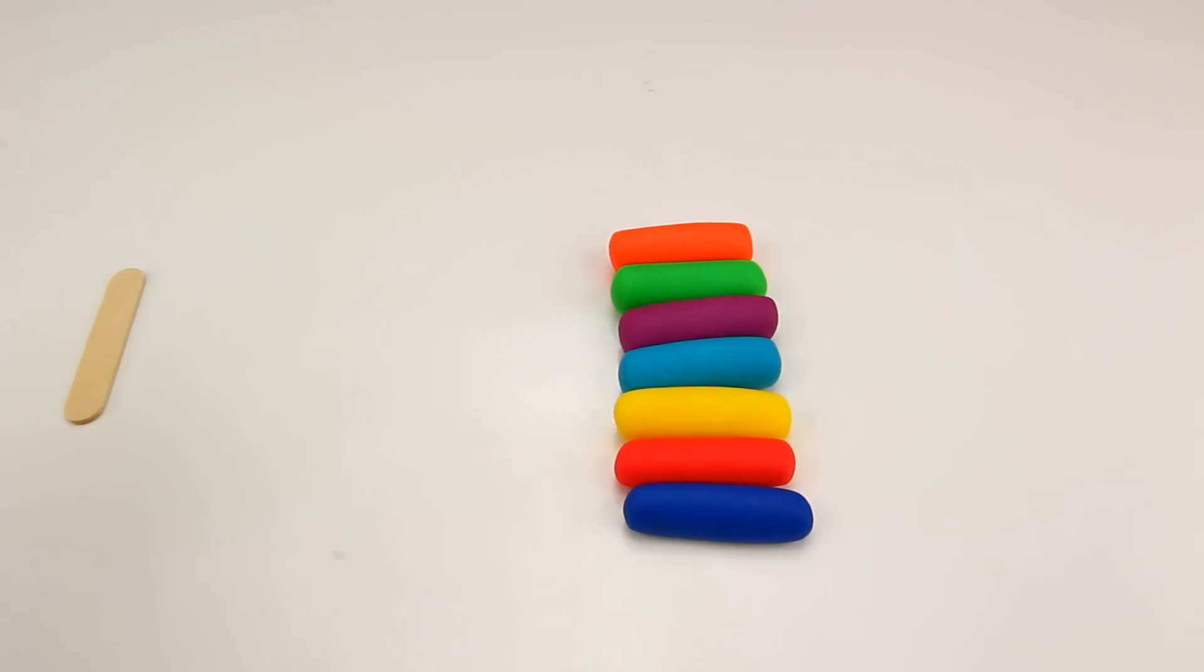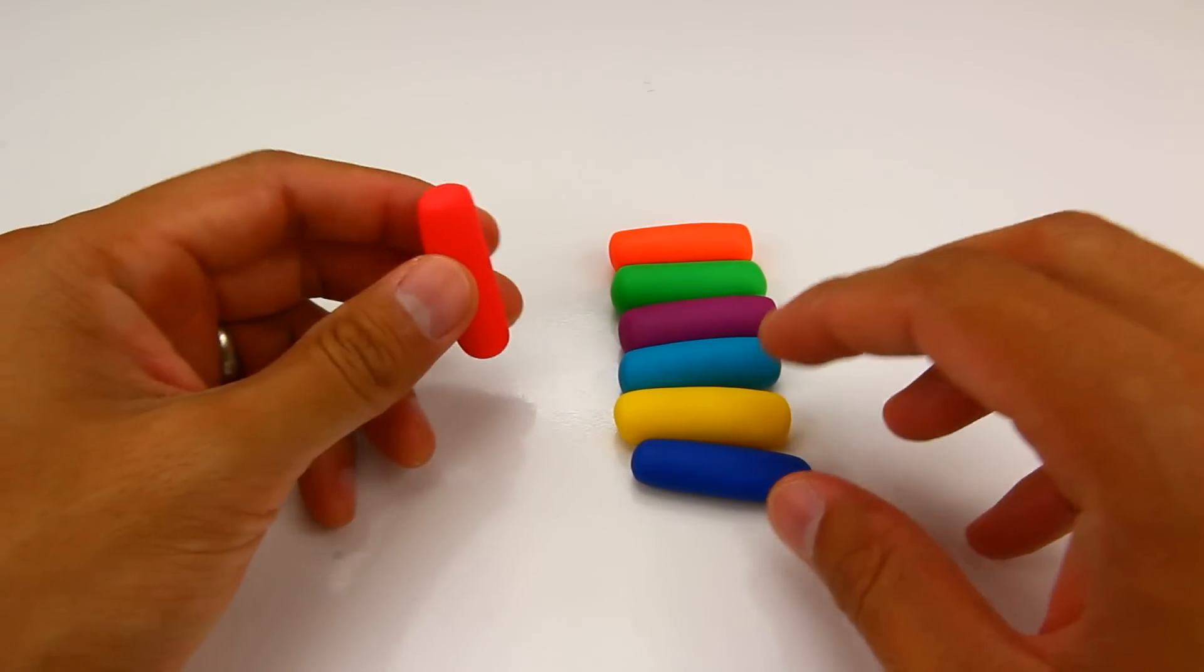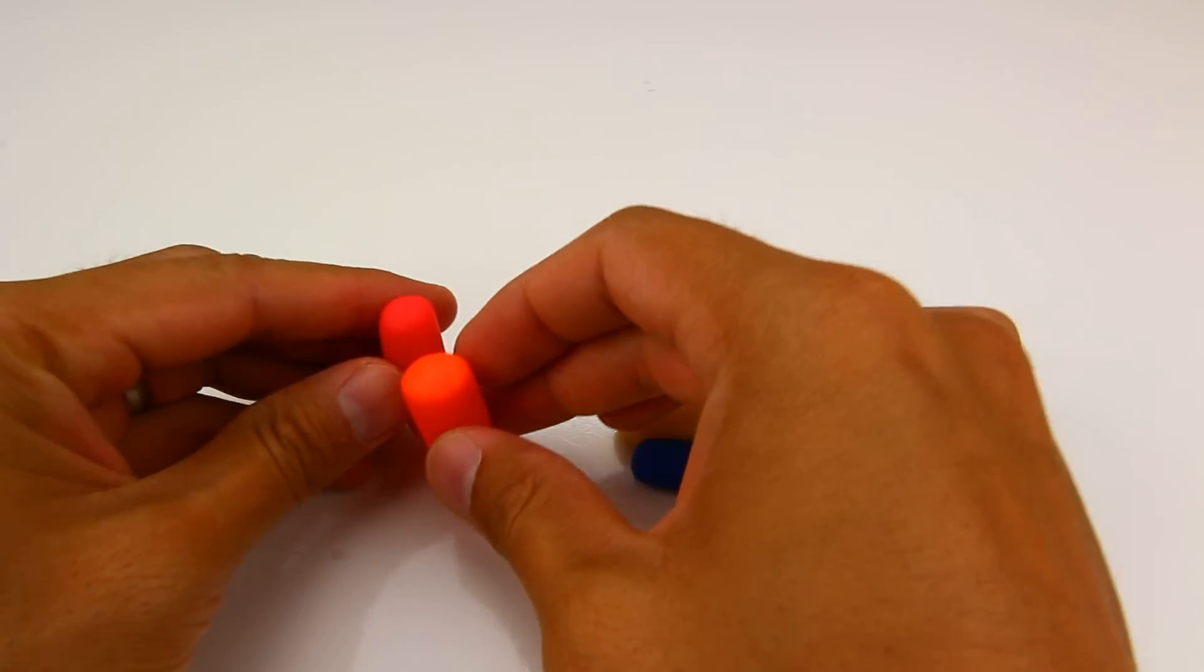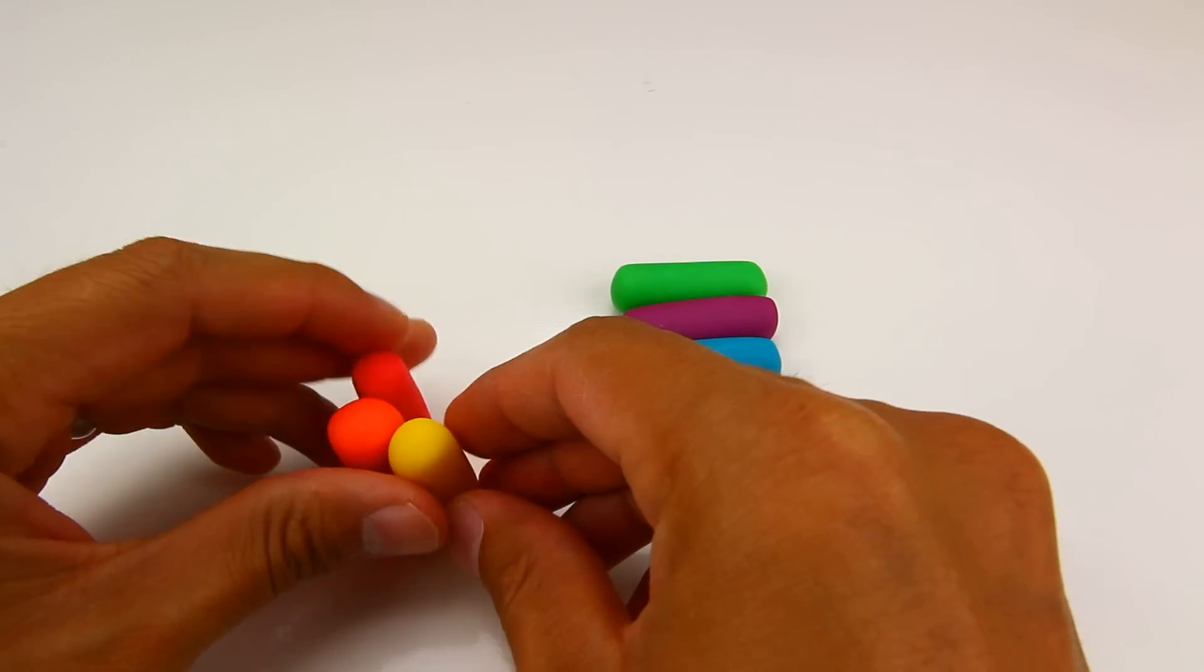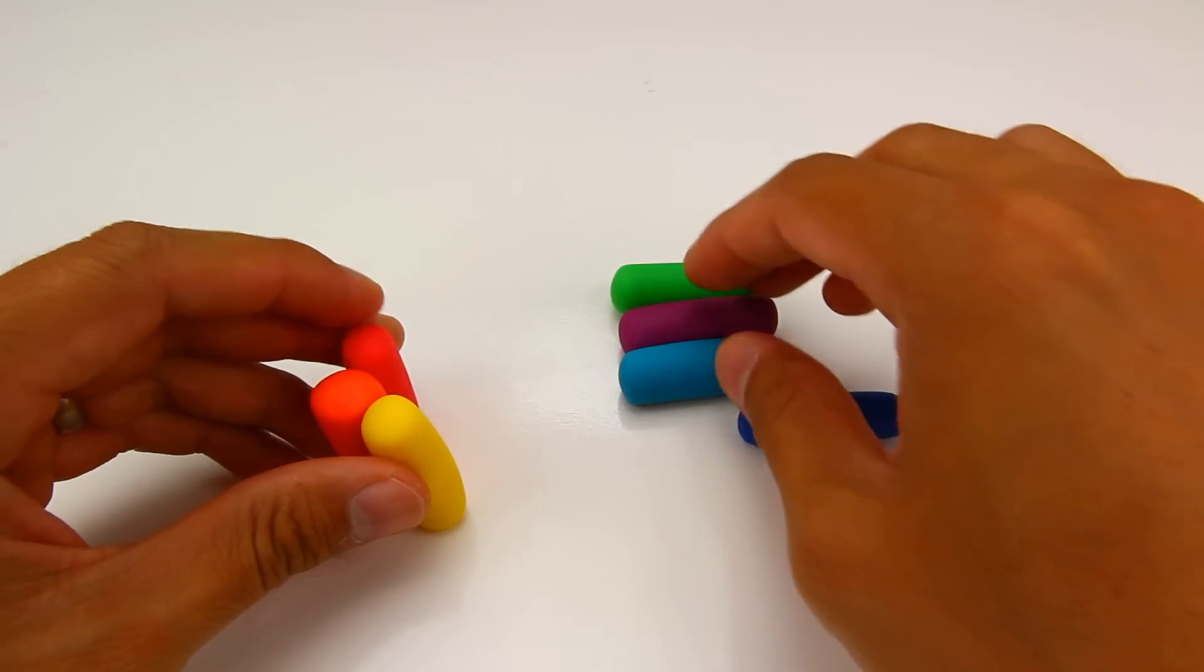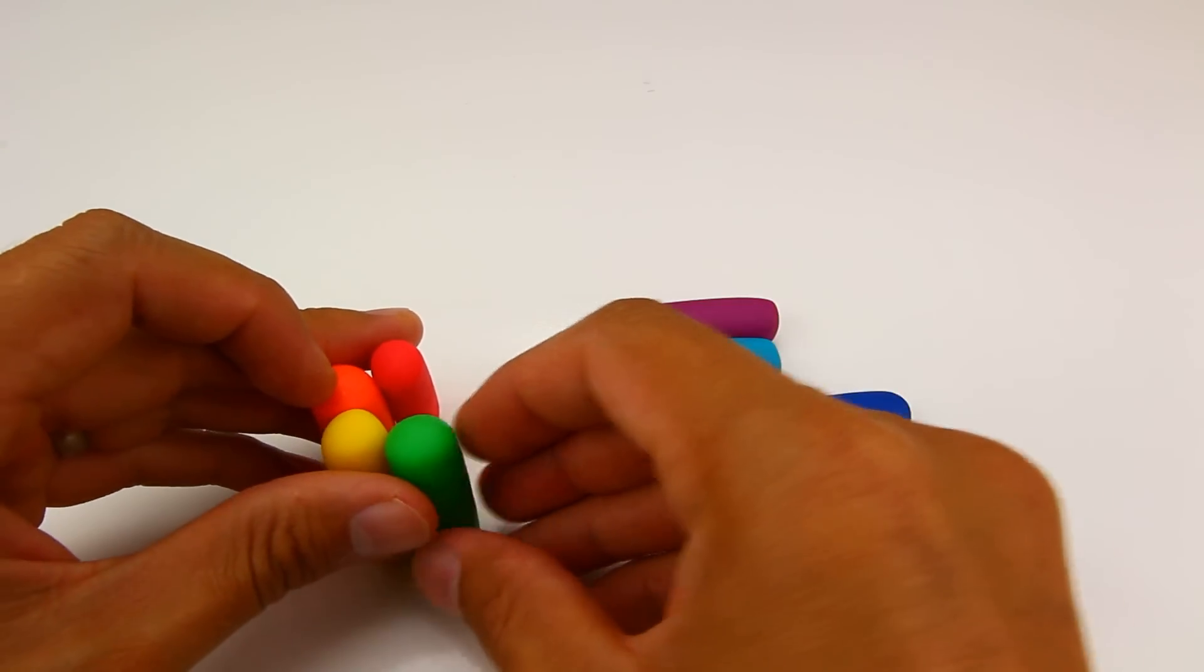Okay, now all the rolls are about the same length and now comes the tricky part. I'm going to carefully start assembling a big roll out of all the little rolls in the rainbow color order.